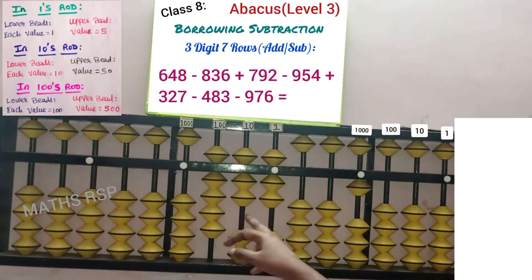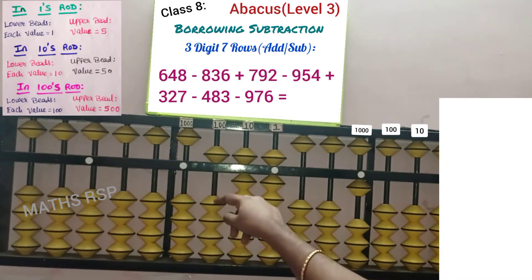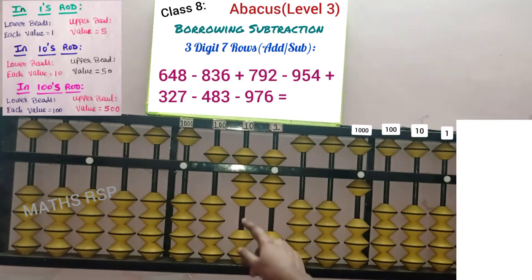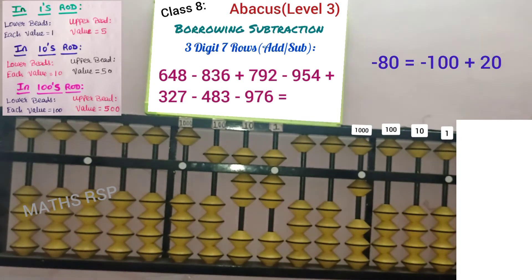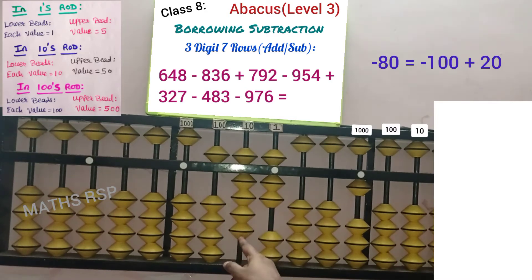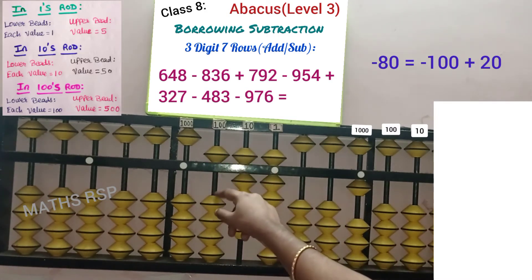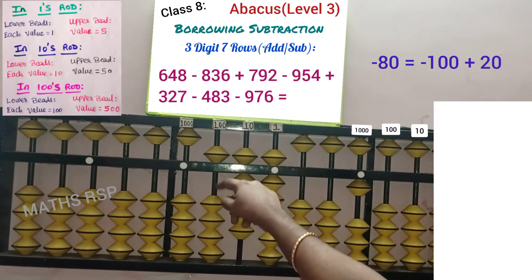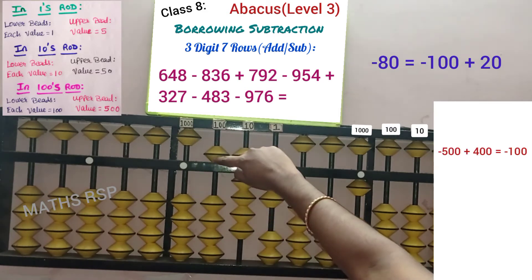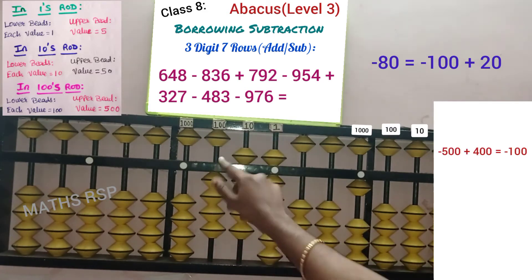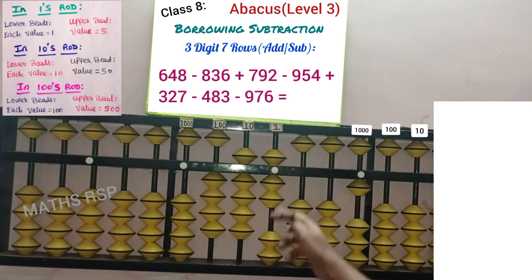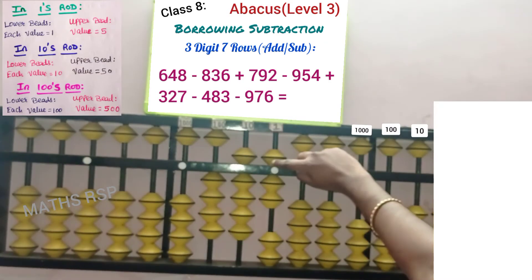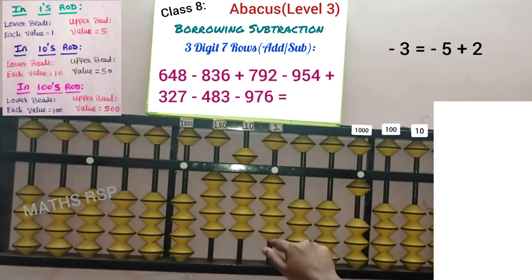Do minus 4 directly here. In the 10 strad only 7 beads are available to remove, hence apply big friend. 8's big friend is 2, so add the 2 here and remove the bars in the next strad — in the 100 strad we need to remove 1 bead in the down direction, which is minus 100. But we cannot remove anything in the lower part, so do minus 500 plus 400 is equal to minus 100 completed. Next, remove 3 beads from the 1 strad; only 2 beads are available in the lower part. Apply small friend: minus 5 plus 2 is equal to minus 3 completed.